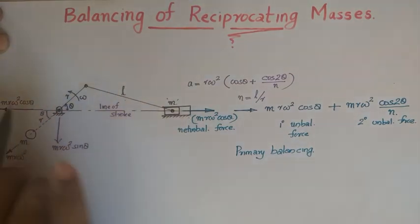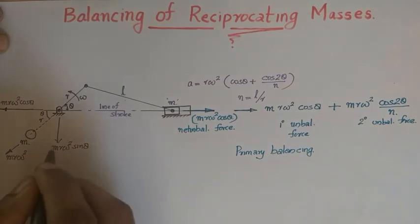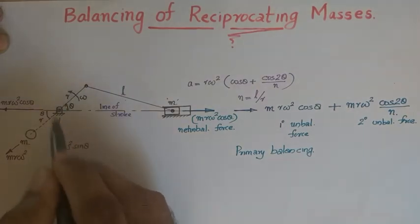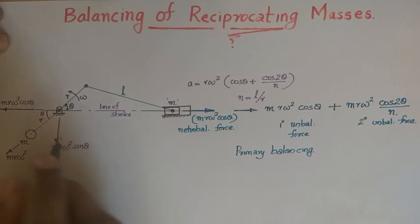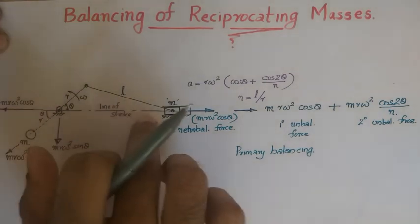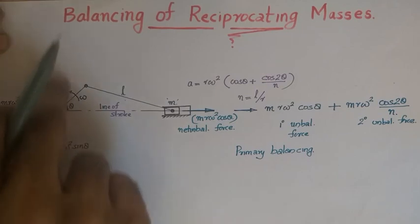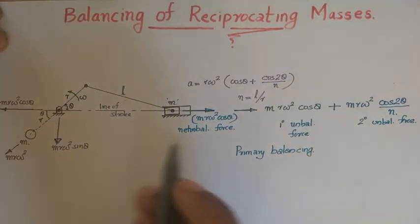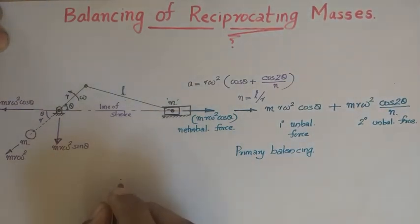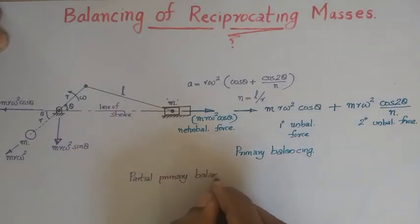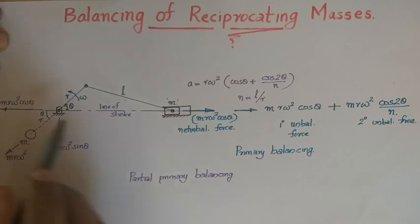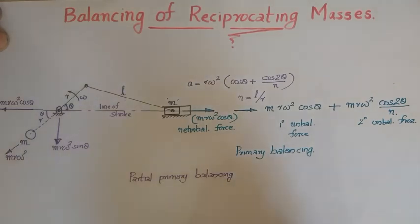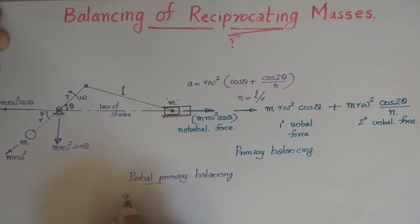However, by adding this mass, an extra component appears — a vertical unbalanced force. Even though the shaking force along the line of stroke is cancelled out, the added mass creates a vertical unbalanced force on the system. Therefore, we cannot completely remove the primary unbalanced force; what we perform is known as partial primary balancing.